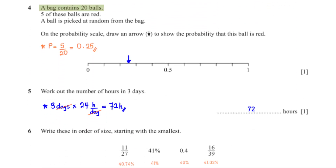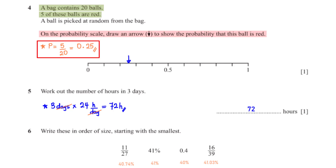A bag contains 20 balls; five of these balls are red. A ball is picked at random from the bag. On the probability scale, draw an arrow to show the probability that this ball is red. This probability equals the number of red balls, which is five, divided by the total number of balls, which is 20. This gives us 0.25, so we place the arrow to indicate a probability of 0.25.